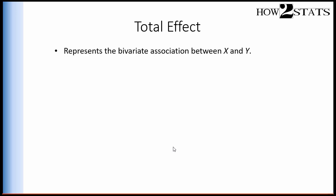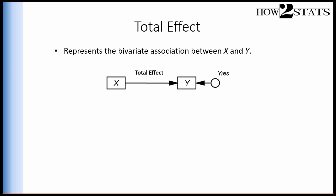So what is a total effect exactly? You actually already know what a total effect is — it represents the bivariate association between X and Y. It's a simple bivariate regression analysis; it's that standardized or unstandardized beta weight you get from a regression analysis. In modeling terms within SPSS or another program, this is what a bivariate regression looks like: X predicts Y, with a residual because the independent variable rarely predicts the dependent variable with full accuracy. In mediation, we refer to this association as the total effect — before the mediator has even been introduced.